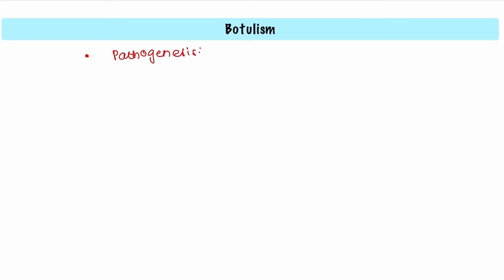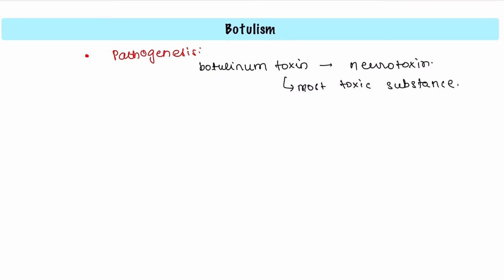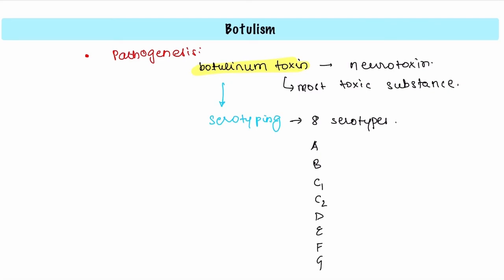Now let's talk about the pathogenesis of botulism. The pathogenesis is due to the production of a powerful neurotoxin — the botulinum toxin. This toxin is a neurotoxin, meaning it can affect the nervous tissue, and it is probably the most toxic substance for mankind. When serotyping of this botulinum toxin is done, it can be typed into eight serotypes: A, B, C1, C2, D, E, F, and G.